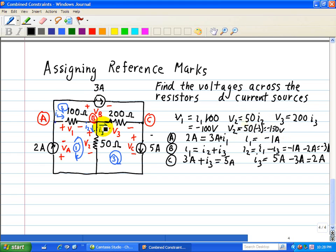Now we have V3, so V3 is 200 ohms times 2 amps, or 400 volts.